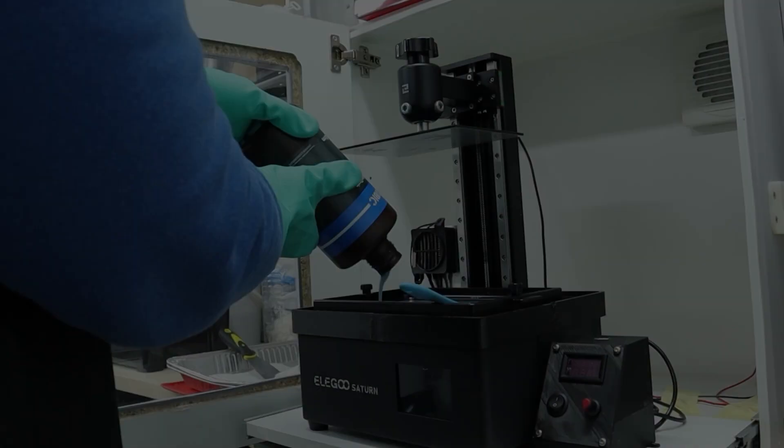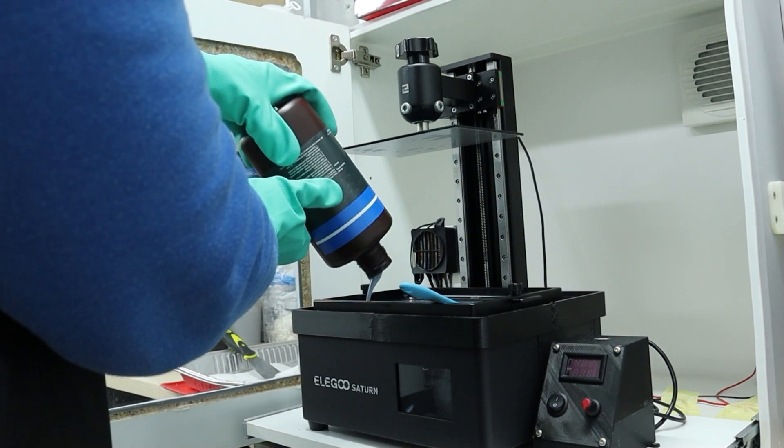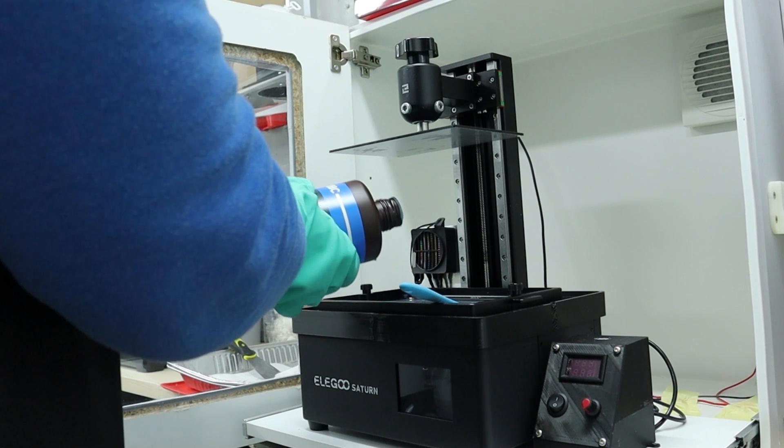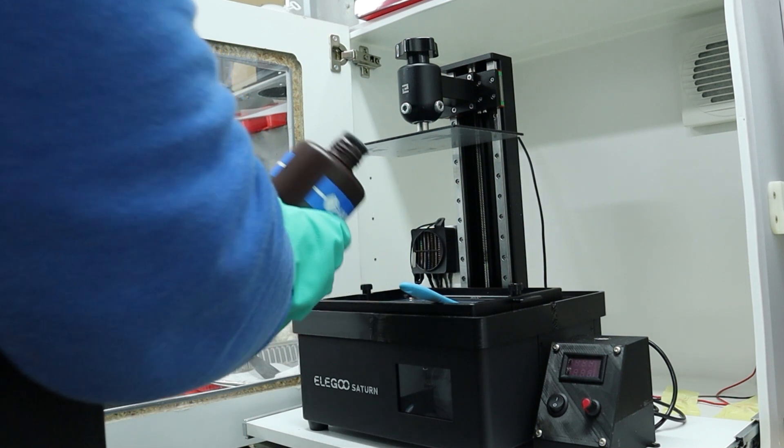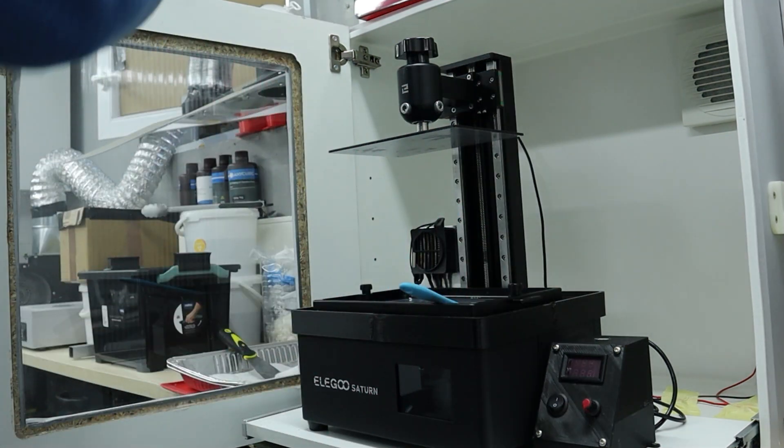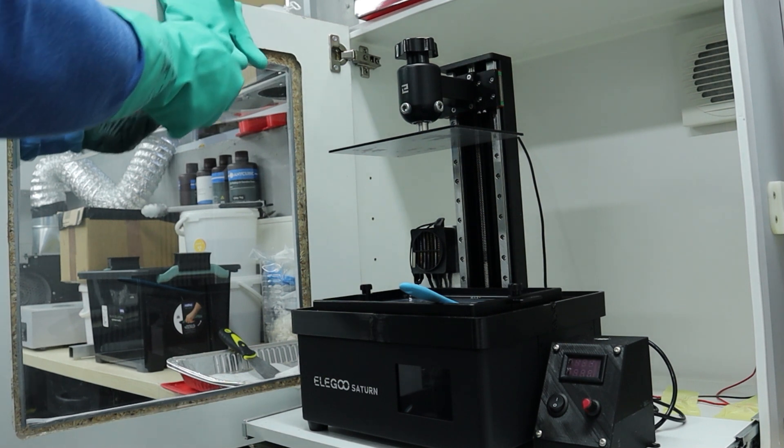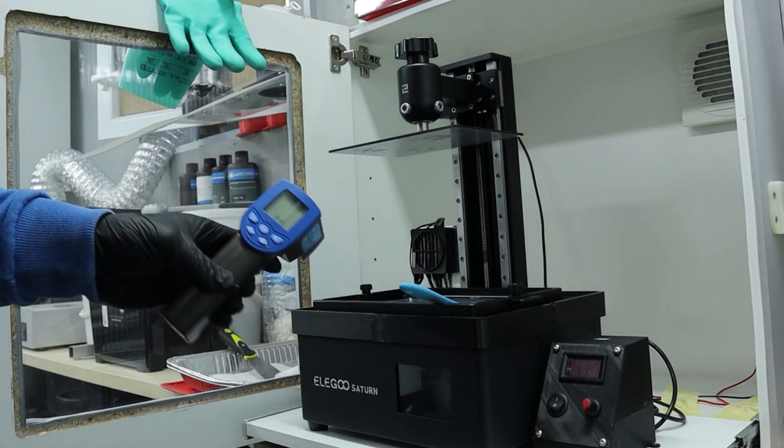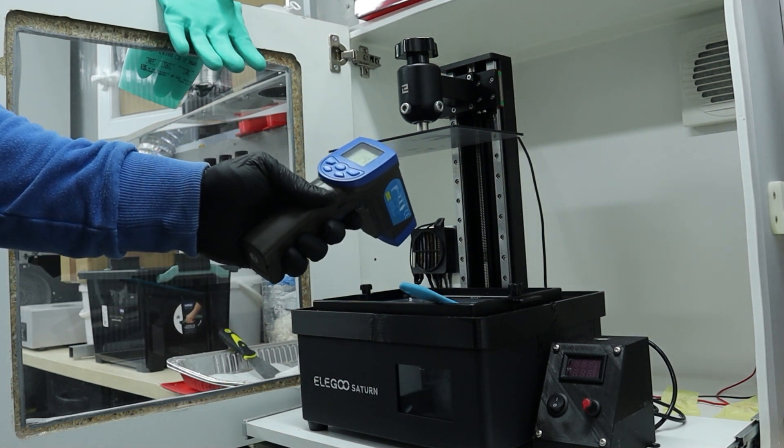Then I pour in the resin and by turning the bottle when it's enough I minimize the amount of resin that will flow down the bottleneck. Next I perform a crucial step: verifying the resin's temperature. Considering the workshop temperature was around 15 to 16 degrees Celsius during the printing process, the resin was too cold.